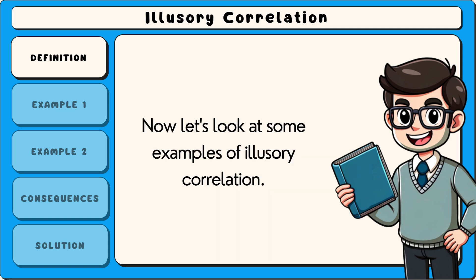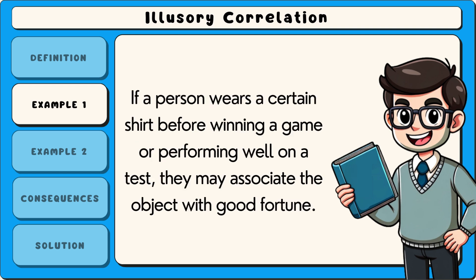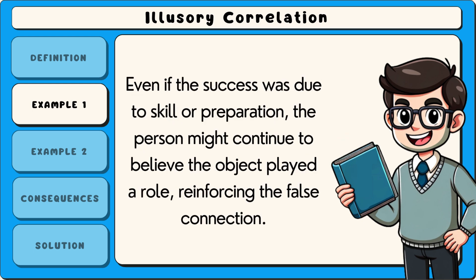One example of illusory correlation is the belief that a lucky object, such as a specific shirt or bracelet, increases success. If a person wears a certain shirt before winning a game or performing well on a test, they may associate the object with good fortune. Even if the success was due to skill or preparation, the person might continue to believe the object played a role, reinforcing the false connection.